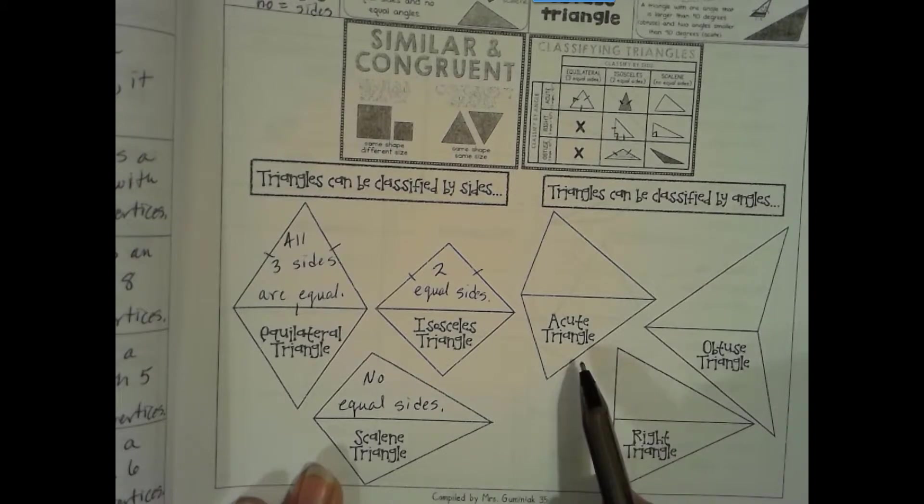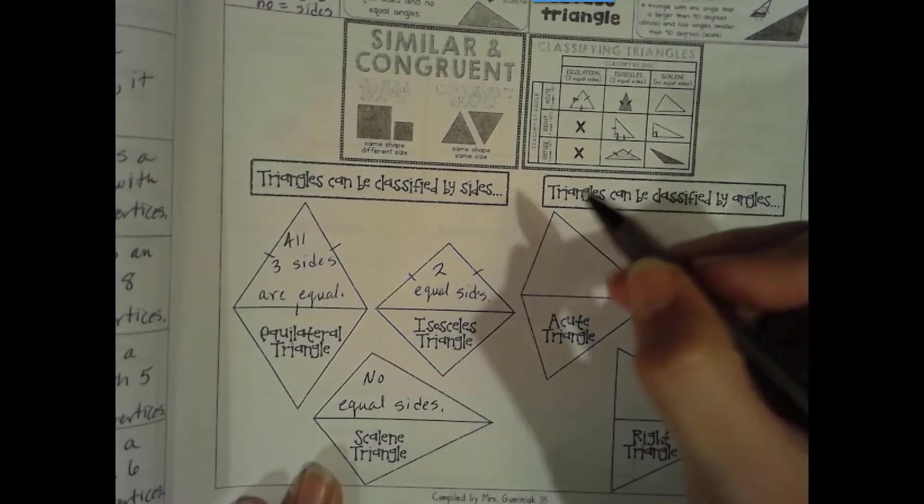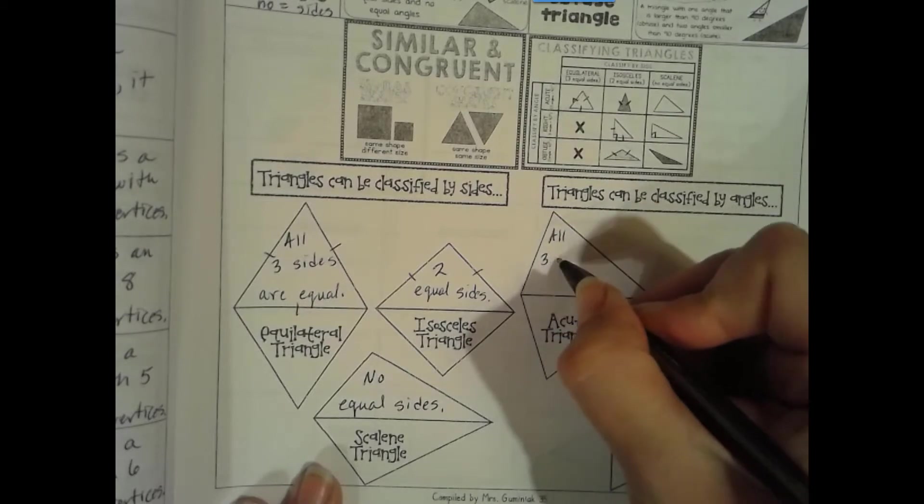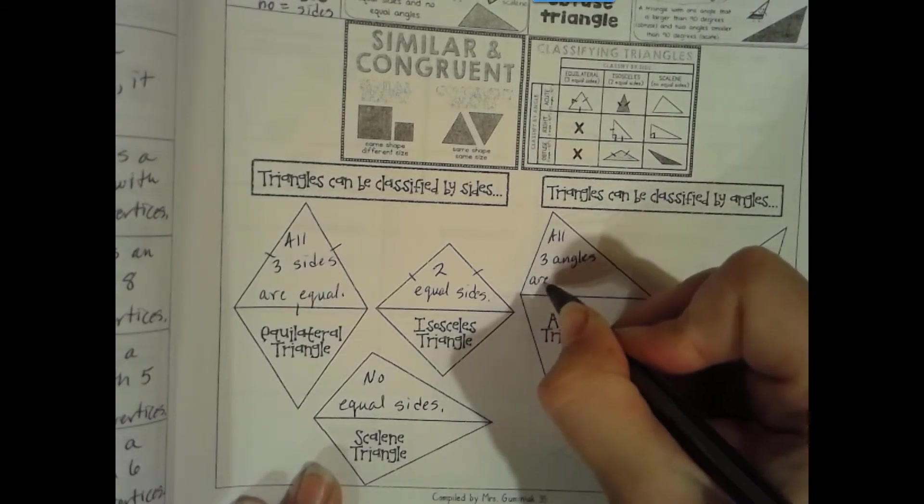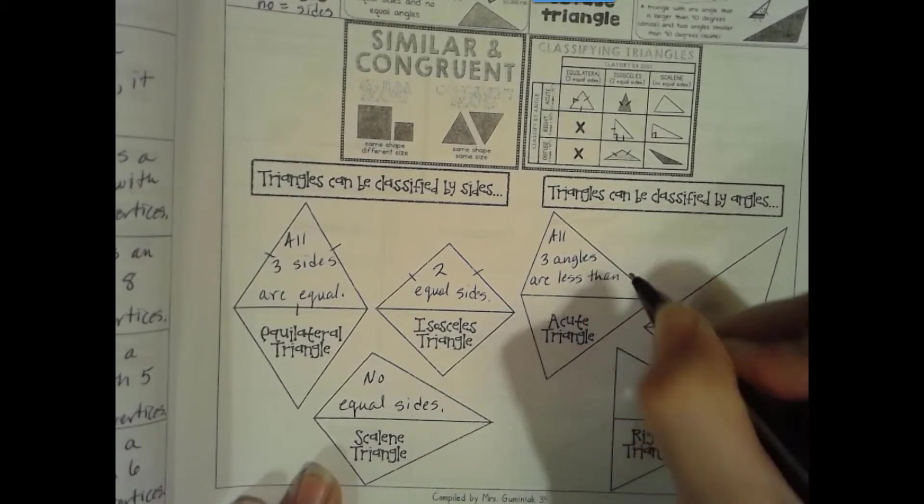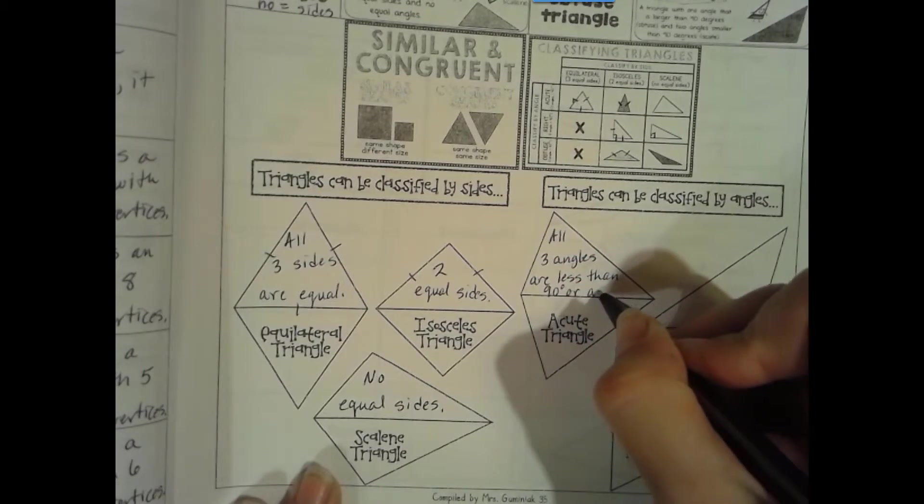An acute triangle. All three angles are less than 90 degrees or acute.